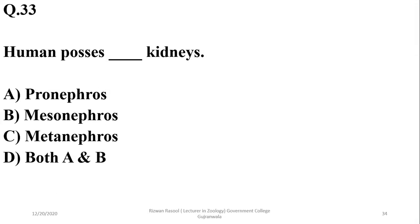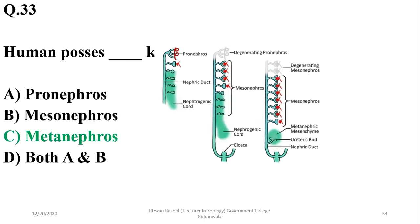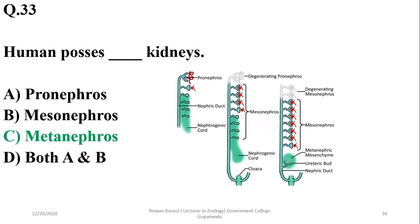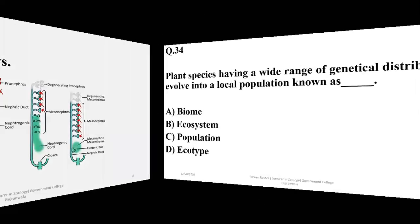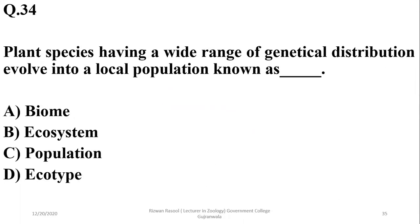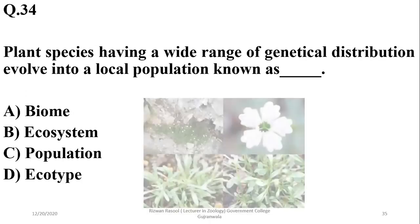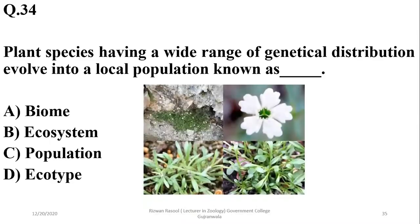Question 33: Humans possess metanephros types of kidneys — this question is repeated in past papers asking about metanephros, pronephros, or mesonephros. Question 34: Plant species having a wide range of genetic distribution that evolved into a local population are known as ecotypes, so D is the right option.